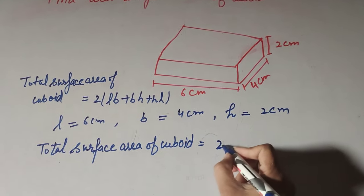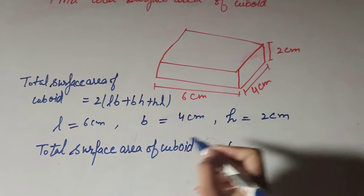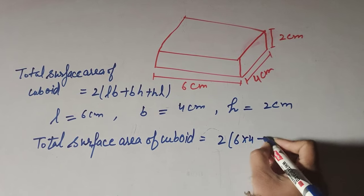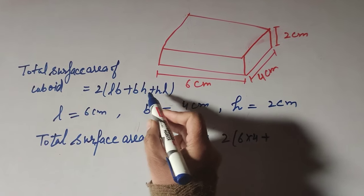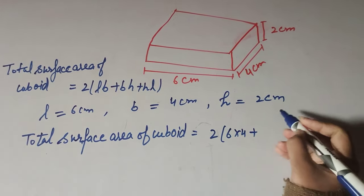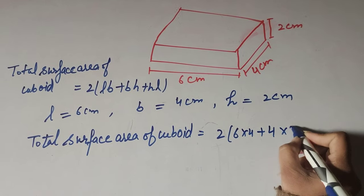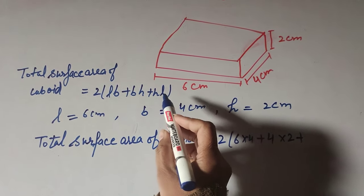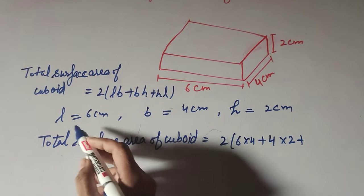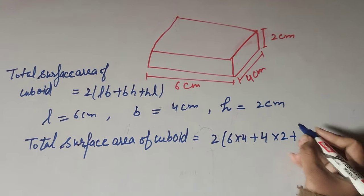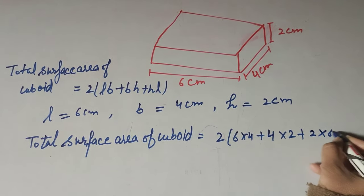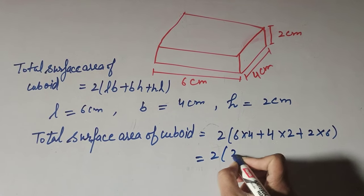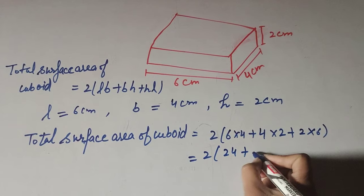Total surface area of cuboid equals 2 into (length into breadth, plus breadth into height, plus height into length) — that is, 2 into (6 × 4, plus 4 × 2, plus 2 × 6), which gives 2 into (24 + 8 + 12).